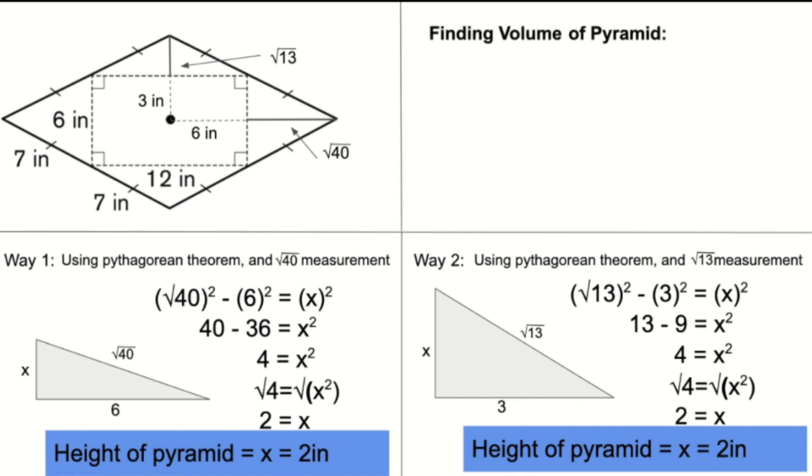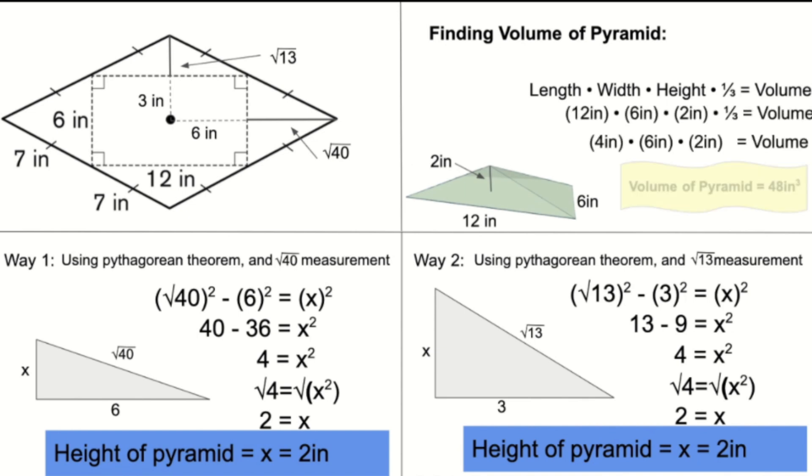Now that we have the height of the pyramid, we can find the volume by using the formula length times width times height times one third. After we insert the values into the equation, we get the volume is equal to 48 inches cubed.